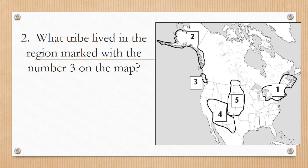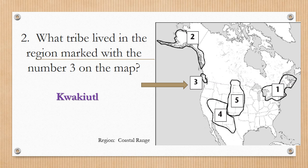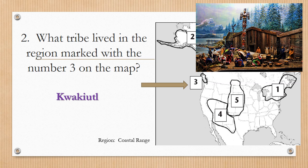Number two: What tribe lived in the region marked with the number three on the map? The answer is Kwakiutl. The Kwakiutl probably reached further down into Washington, Oregon, and parts of California as well as that part of Canada. The region to remember for the Kwakiutl is the coastal range. They lived in wooden shelters because the climate there is rainy, and they are the ones to remember who had the totem poles.